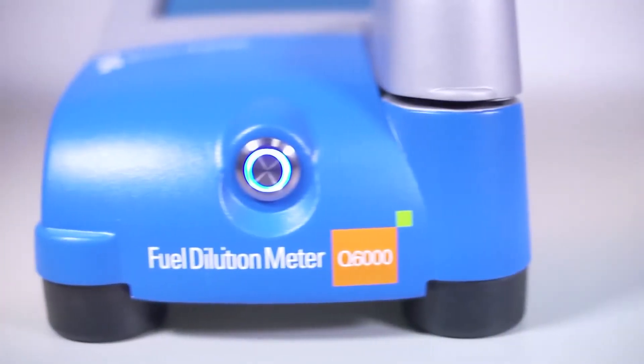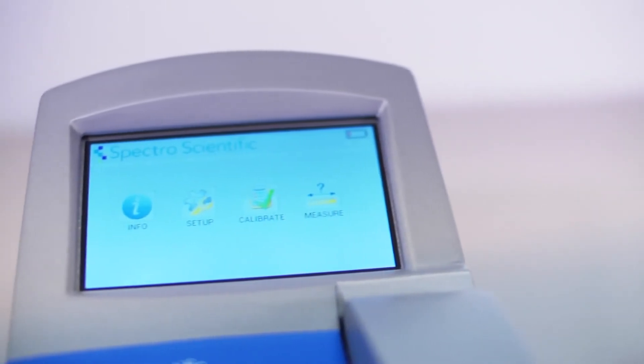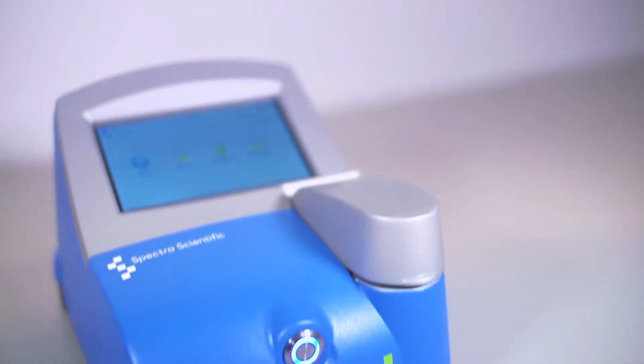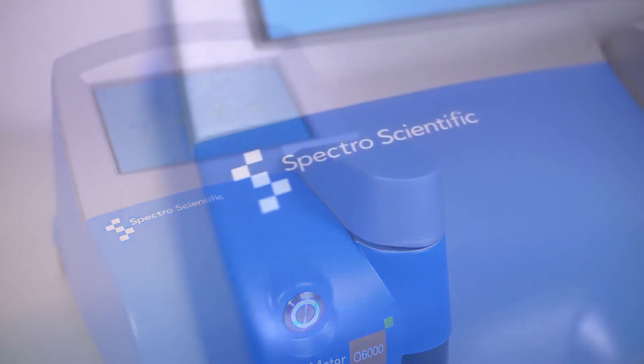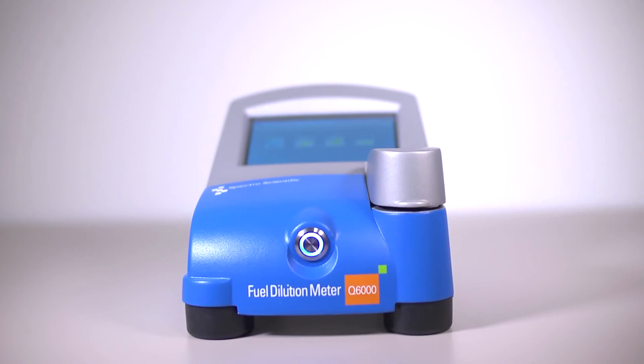The Q6000 minimizes the worry and errors that come with learning different methods and equipment. Its simple to use interface lets you maintain equipment at peak performance with less downtime and the results correlate to expensive GC methods.